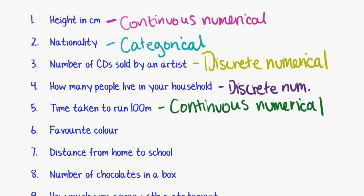Next one there, favorite colour. Well, these are going to be all word responses, aren't they? We're not going to say my favorite colour is 2. The favorite colour is going to be blue, green, red, yellow. They're all word responses, they're categories, making this categorical.